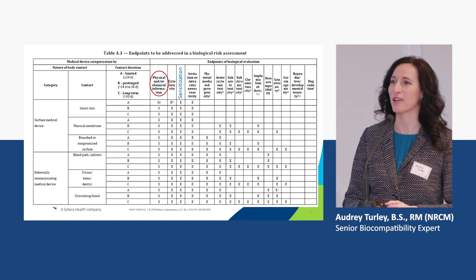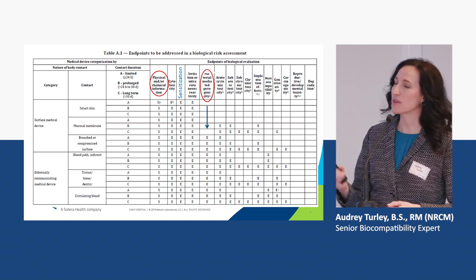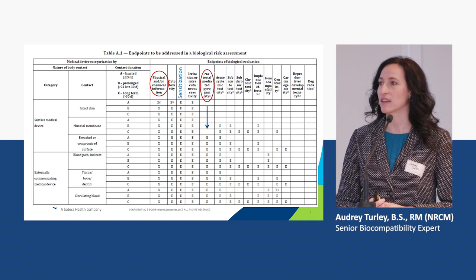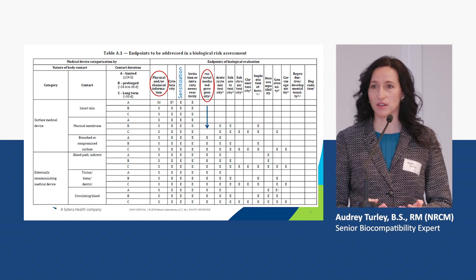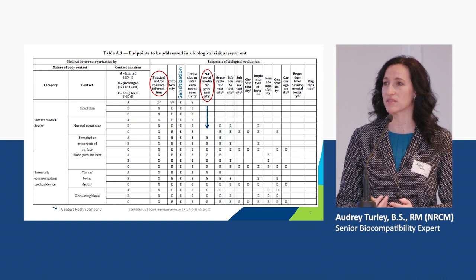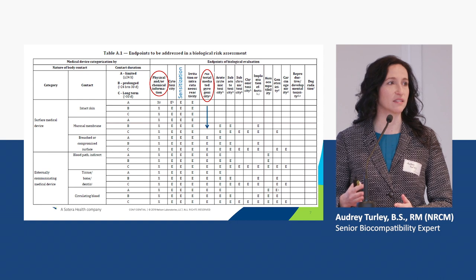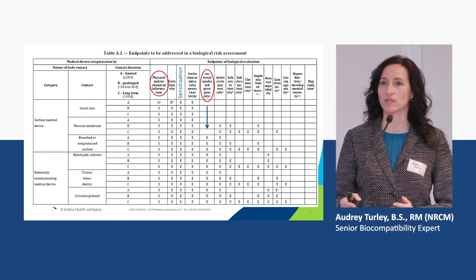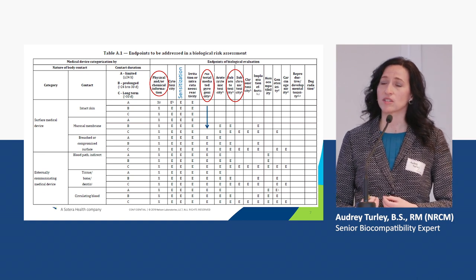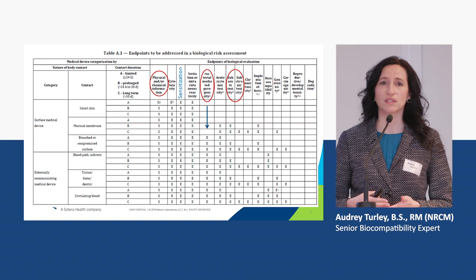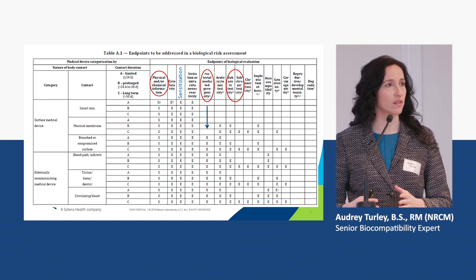I've added sensitization here — we always miss something in committee, and this time we missed this title, so that column references sensitization. Another addition is a column for material-mediated pyrogen testing. This is not a new test — it was previously tucked under acute systemic toxicity in 10993 Part 11 — but the recommendation from industry and our ISO meetings was to separate it out so people understand it requires a separate set of tests to address pyrogenicity.